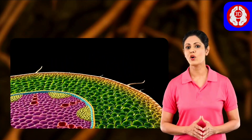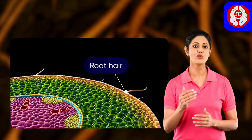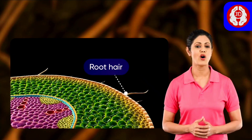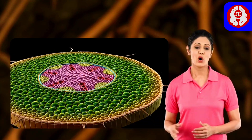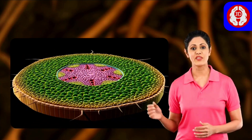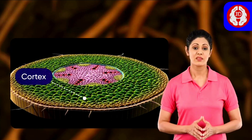A few of the epidermal cells protrude out to form root hair. On the inner side of the epidermis is the cortex.